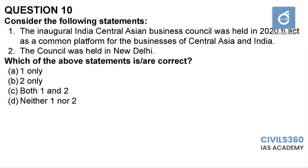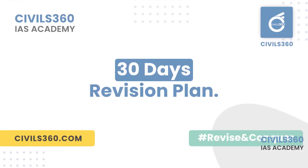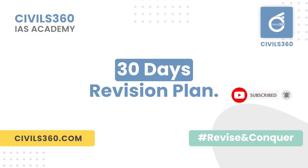Question number ten: consider the following statements. Statement one — the inaugural India-Central Asia Business Council was held in 2020 to act as a common platform for businesses of Central Asia and India. Statement two — the council was held in New Delhi. Under the initiative of the Ministry of External Affairs and FICCI, the India-Central Asia Business Council was launched in 2020, joined by five countries: Tajikistan, Uzbekistan, Turkmenistan, Kazakhstan, and the Kyrgyz Republic. The inaugural session was conducted in New Delhi. Therefore the answer is option C: both one and two. That's all for today — we will be posting the next set of topics and questions tomorrow. Thank you.